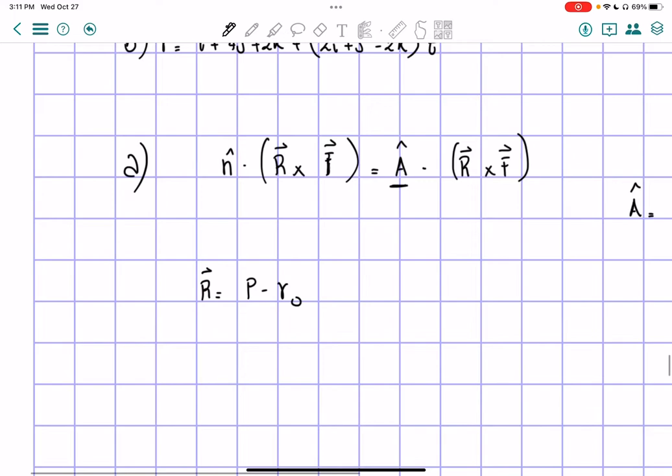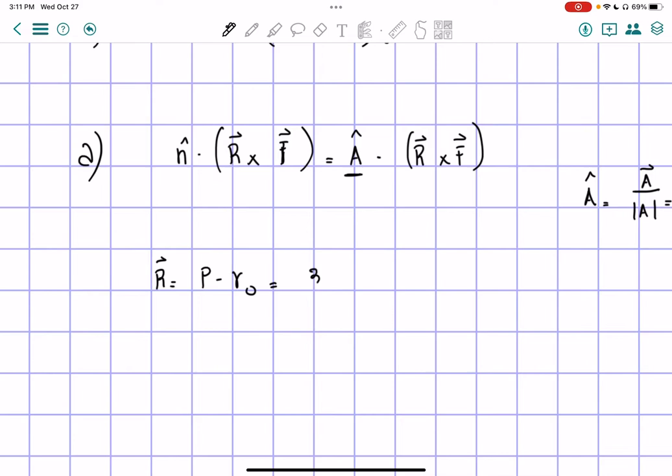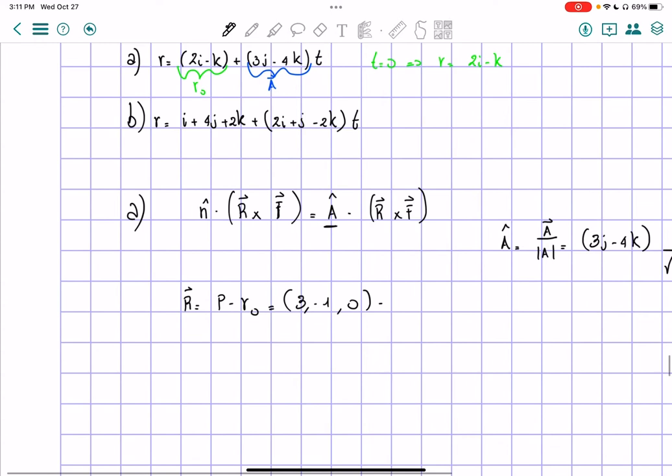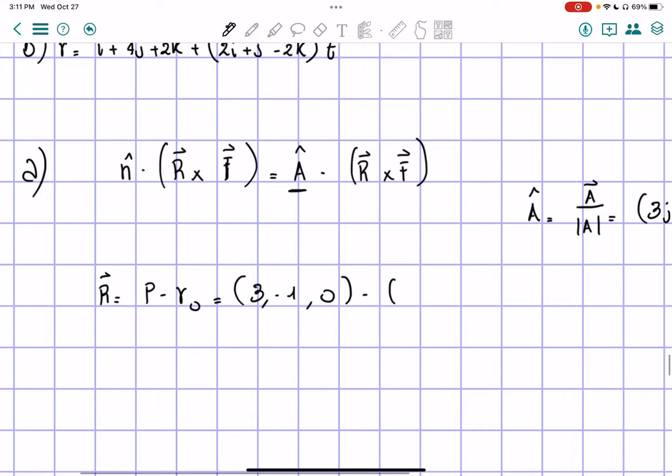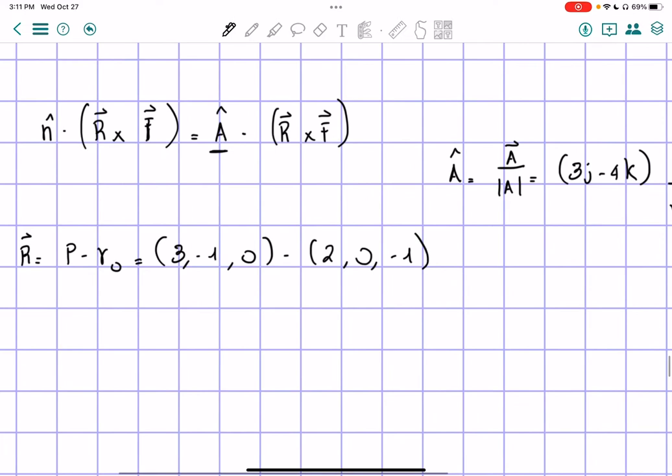Now we're going to have to do the point P minus r₀, so P minus r₀. So point P is equal to 3, negative 1 and 0, minus r₀, which is simply going to be 2i minus k, we can rewrite it as 2, 0, negative 1.